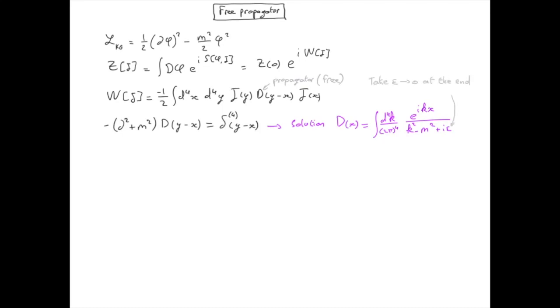We will now verify that this expression for the propagator is solution of this equation. First, we notice that the derivative only acts on the spacetime position, which only appears in the numerator as part of the exponential. So let's first calculate del squared of exponential ikx.